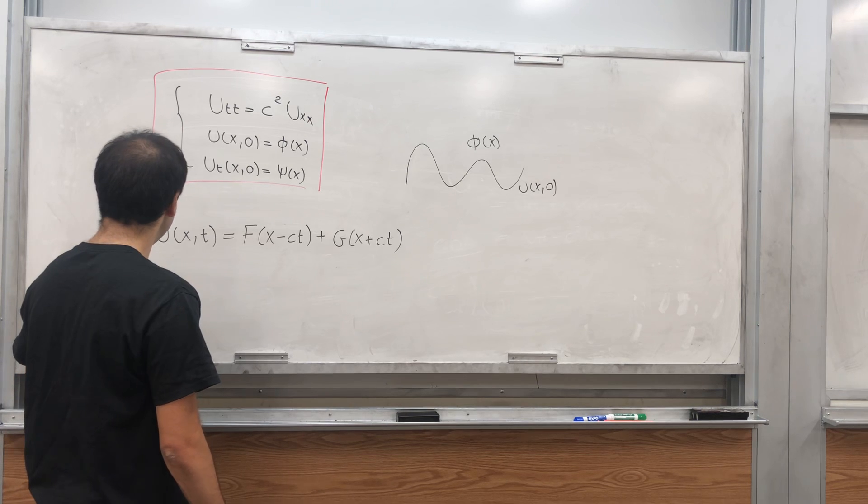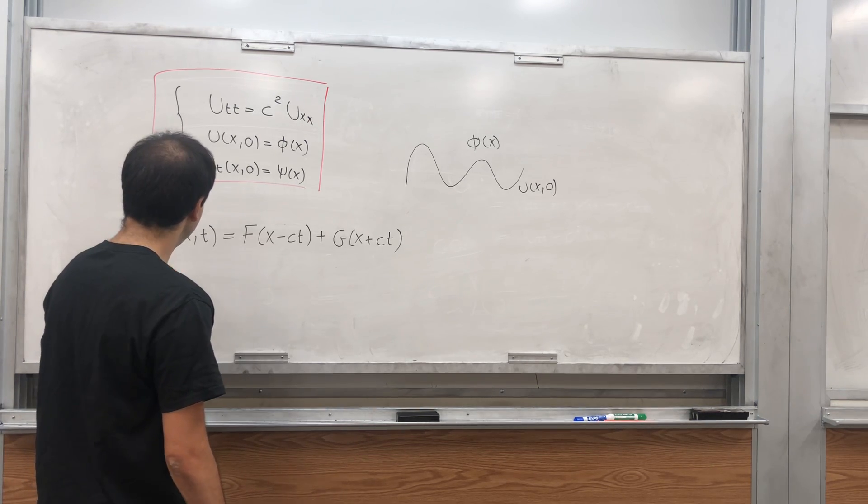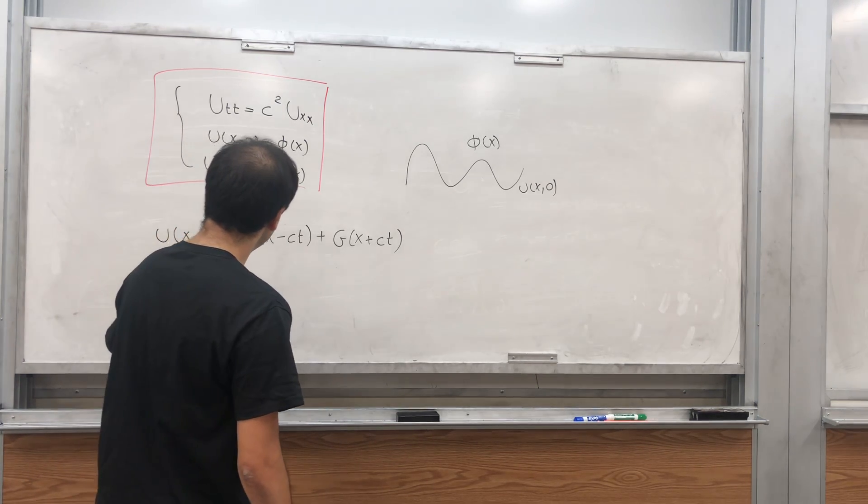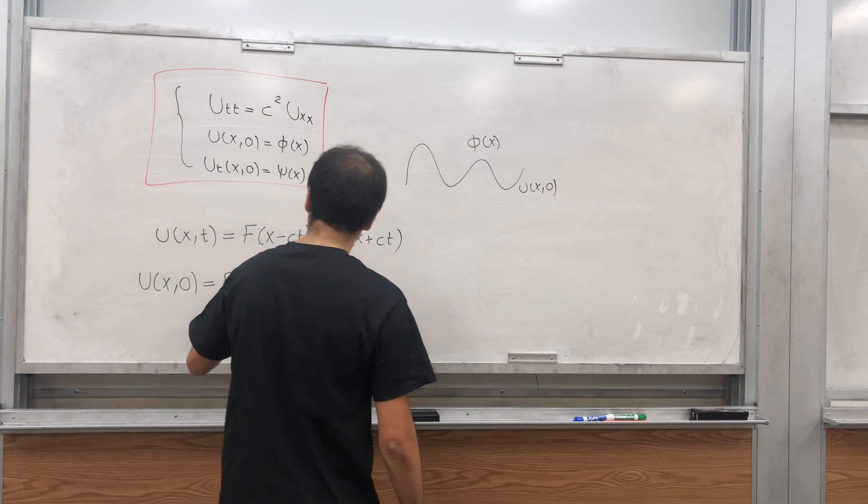So if you plug in T equals zero, you get u(x,0), that's F of x minus c times zero.